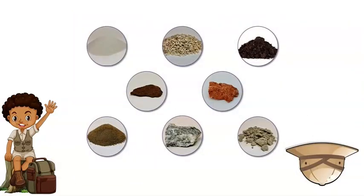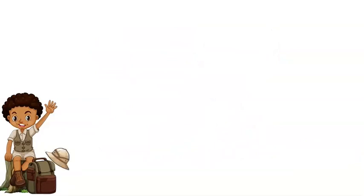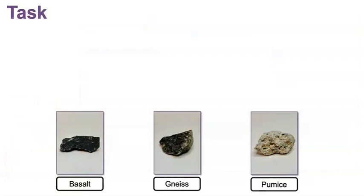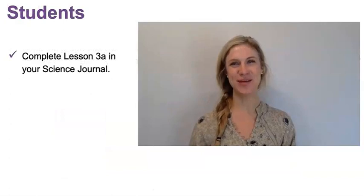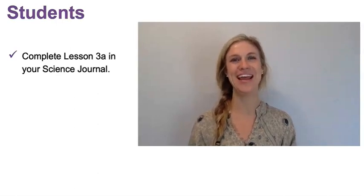Wow! We observed so many different land samples. For now, we'll put these land samples away and say goodbye to our friends. Next time, we will observe properties of land samples I collected from Yosemite National Park. Let's review your task for today. Write the properties you observed for the land samples below. Make sure to include color, texture, and shape. Thanks for joining me on today's journey as we observed and described land samples. Your task for today is to complete lesson 3A in your science journal.